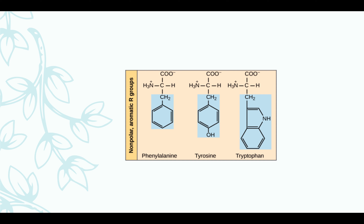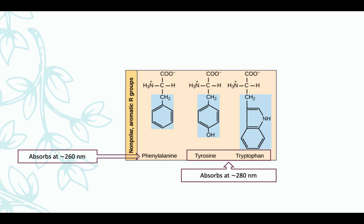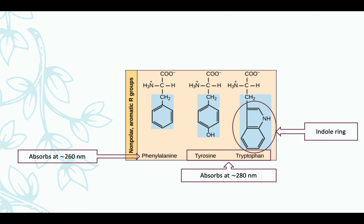Let's move to the non-polar aromatic R-groups. Since you have conjugation here, it follows that these amino acids can absorb at different wavelengths. Your phenylalanine absorbs at around 260 nanometers, while your tyrosine and tryptophan absorb at around 280 nanometers. Also, your tryptophan has an indole ring. It is worth remembering that these amino acids are essential — if you look at their structure, you'll notice they are aromatic and thus have complicated R-groups. Your body cannot synthesize them because it would cost too much energy and we lack the enzyme to do so.